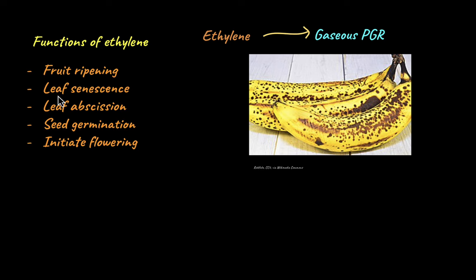Ethylene is also involved in leaf senescence. Senescence is the aging of plant parts. As the leaf becomes older, the amount of chlorophyll in the leaf decreases and the leaf begins to age and eventually falls off. So ethylene promotes the senescence or aging of leaves.